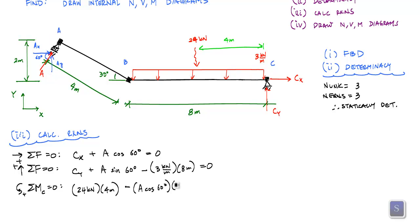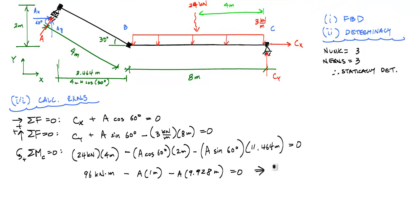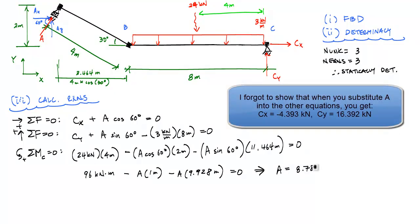...which is A sine of 60 degrees times the total distance from point A, that horizontal distance. If you just use some basic trig, this is 3.464 meters or four cosine of 30 degrees. So the total arm is 11.464 meters equal to zero. I work some math out. From all that I will get that A is equal to 8.785 kilonewtons.